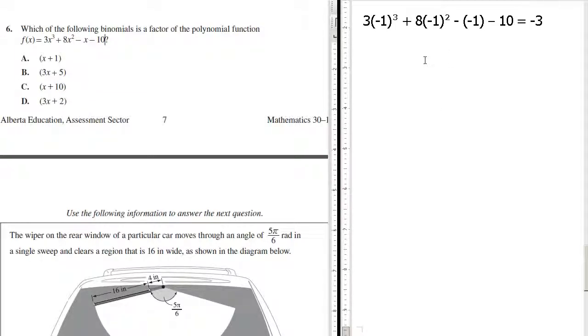Negative one squared is one, so it's plus eight. Negative three plus eight, minus minus one, so that's plus one, minus ten. That's not giving us zero, is it? Negative four. So we didn't get zero, so that's not the right answer. Let's move on.